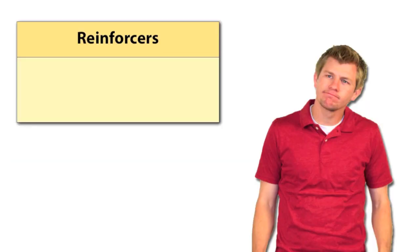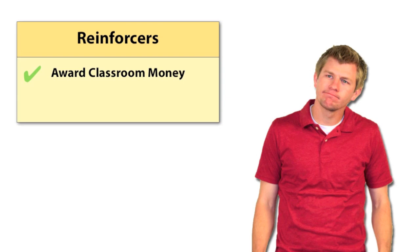Next, Teacher Tony must decide on reinforcements or consequences for his students. Teacher Tony decides on two reinforcers. First, Teacher Tony will award classroom money to students who demonstrate the behaviors. Money can be spent on class rewards such as using notes on a quiz or turning in homework late with no penalty. Second, Teacher Tony will take away money from students who fail to demonstrate the behaviors.